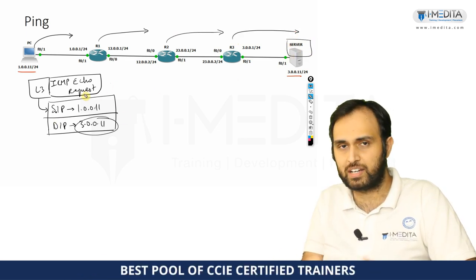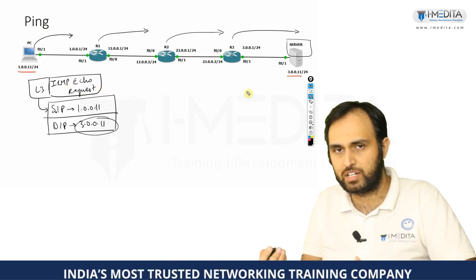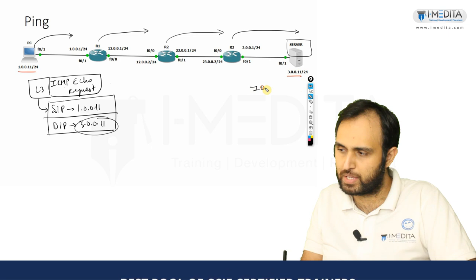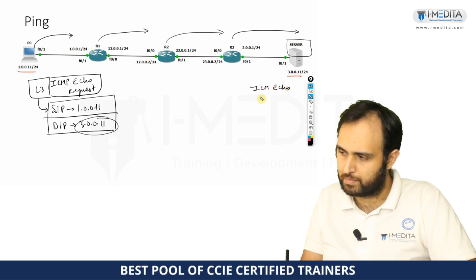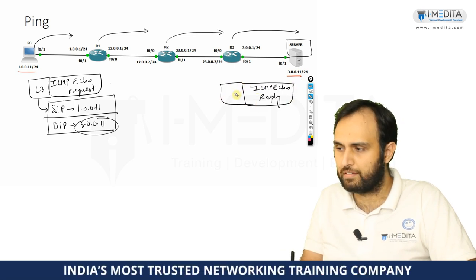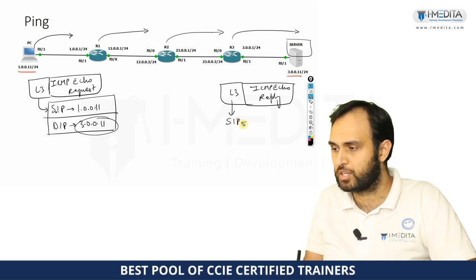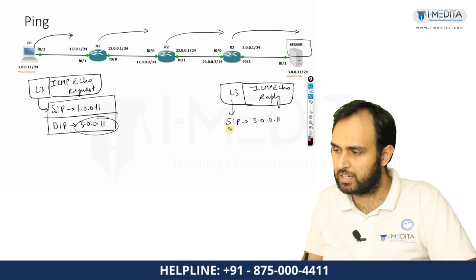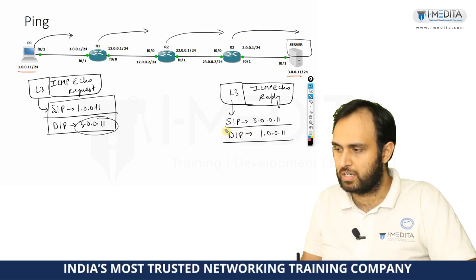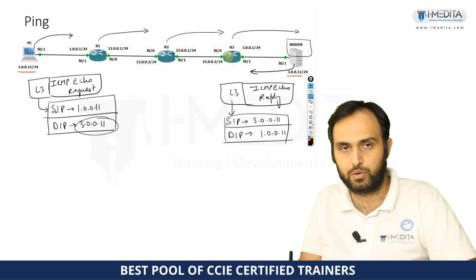The server looks at the ICMP echo request and determines that this source needs a reply. So the server creates an ICMP echo reply. That echo reply will have a Layer 3 header where the source and destination are flipped — source IP is 3.0.0.11 and destination IP is 1.0.0.11.